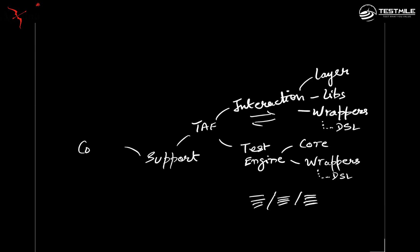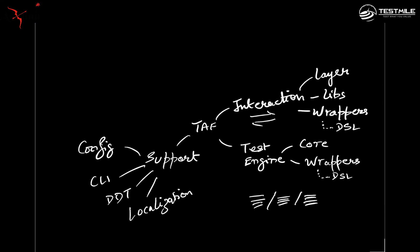An example of that could be configuration — you could have a project level config, a central config, a context level config, and so on. Another example could be a CLI, a command line interface. Another example is adding data-driven support for various formats — taking data from CSV, JSON, XML files, databases, or web services. You could also be talking about localization, which is often an ignored feature but is becoming more and more critical in the connected world today. And you can keep listing all these support features.